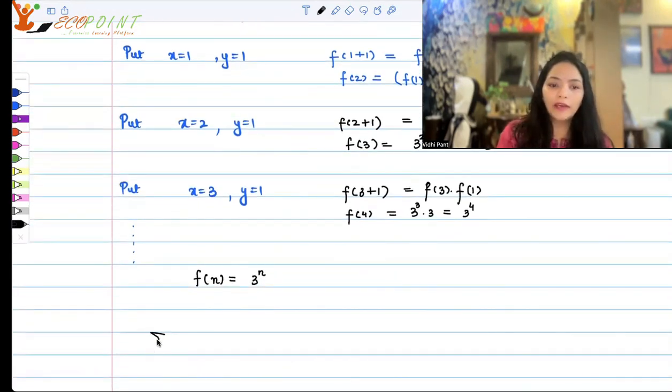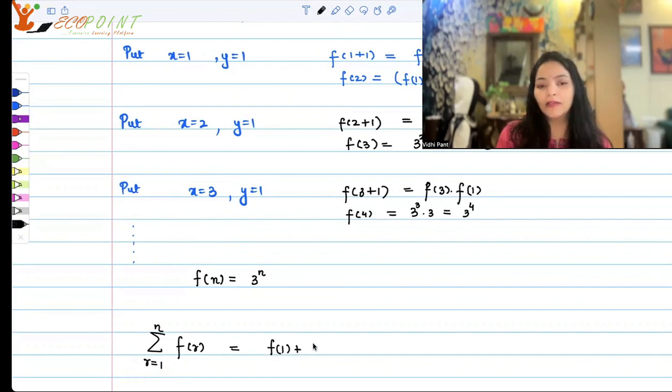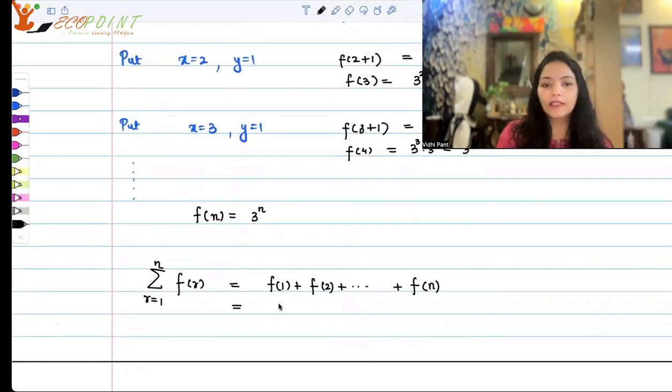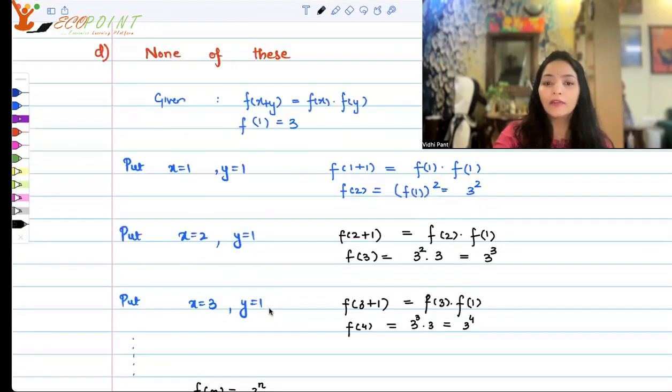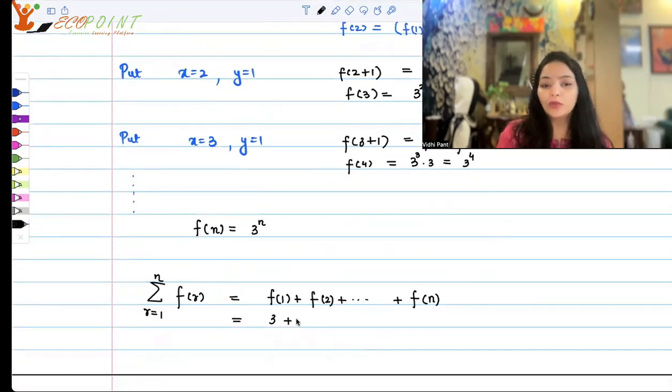So what we have to find out is the summation f(r), where r goes from 1 to n. So that means we are looking at f(1) + f(2) + so on and so forth till f(n). So that means we are looking at 3, f(1) is 3, f(2) is 3^2, 3^3, then so on and so forth till 3^n, right? So we have to find the finite geometric sum. This is nothing but a geometric progression. You have to find the finite geometric sum.